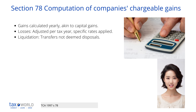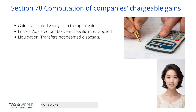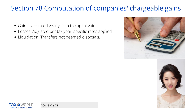The calculation of chargeable gains and allowable losses for companies follows the principles of capital gains tax, treating accounting periods as tax years. In the context of capital gains tax principles, any mention of income tax should be understood as referring to corporation tax.